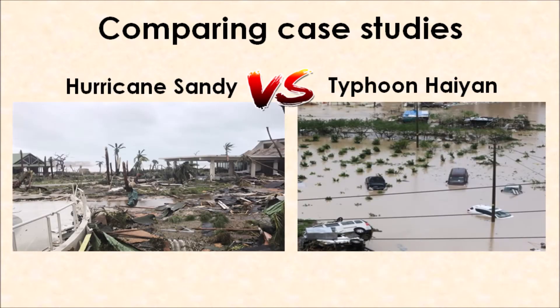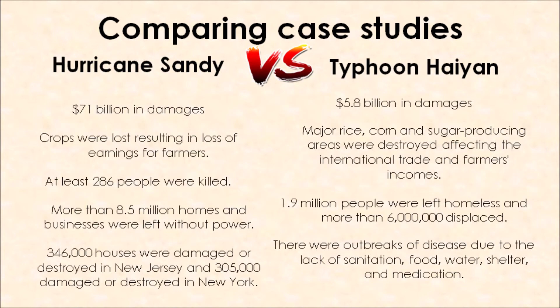If we compare our case study knowledge, we can start with some photographs. The damage that these low pressure weather systems cause may look similar when we see reports on the news — typhoons, hurricanes and cyclones destroy houses, damage power lines, and create storm surges and flooding. But when we look at these case study examples in more detail and compare specific impacts, we see a completely different picture. Hurricane Sandy caused $71 billion worth of damage, compared to $5.8 billion for Typhoon Haiyan.